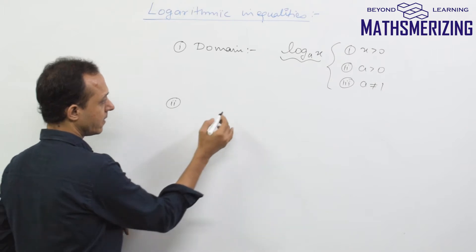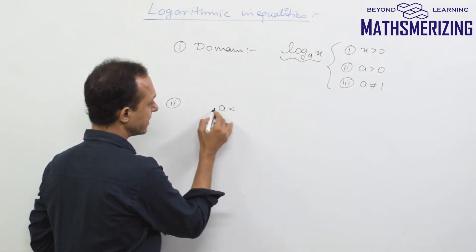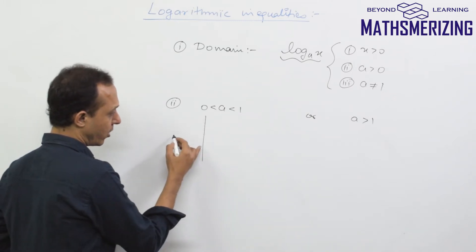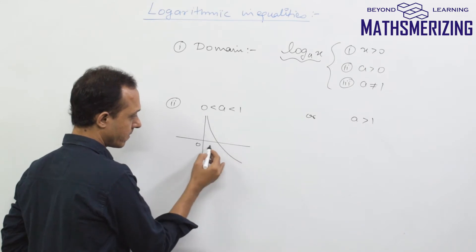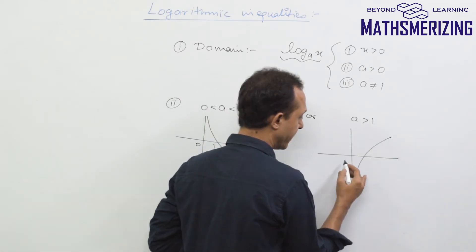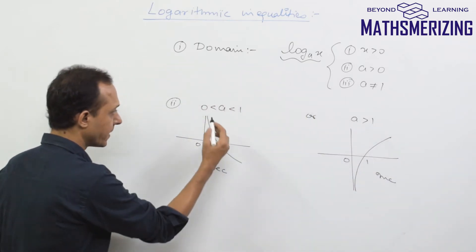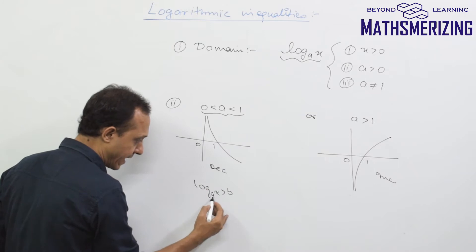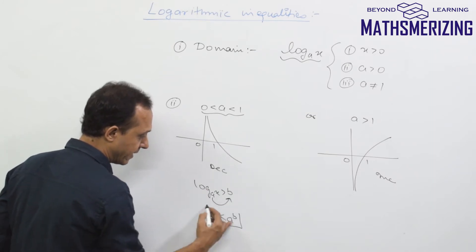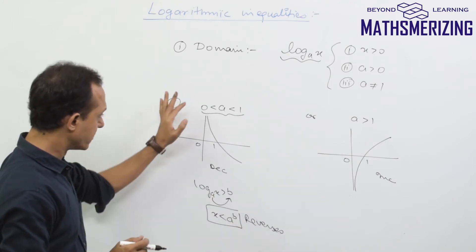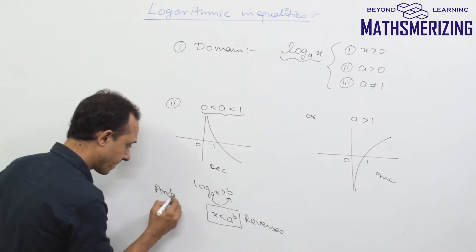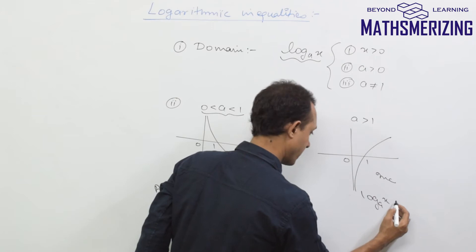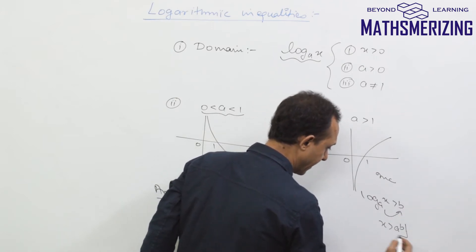The second step is to identify whether the base lies between zero and one, or the base is greater than one. When the base lies between zero and one, log x is a decreasing function. When the base is greater than one, log x is an increasing function. If the base lies between zero and one and we take antilog, the sign of the inequality reverses. If it is an increasing function and we take antilog, the sign remains the same.